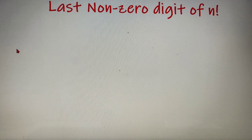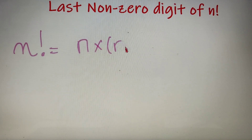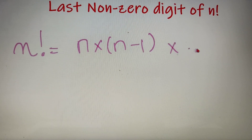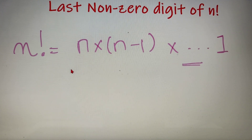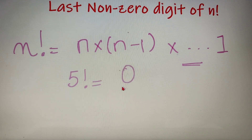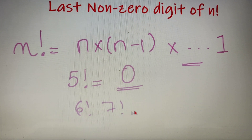Now as you all know, n factorial is the product of all the natural numbers up to n. You may also know that all the numbers from 5 factorial onwards end in 0. So 6 factorial, 7 factorial, and so on — all of them end in zeros.